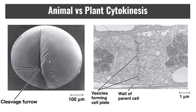In animal cytokinesis, a cleavage furrow develops. The cleavage furrow forms near the old metaphase plate from a contractile ring of actin microfilaments associated with the motor protein myosin, acting like a little muscle that cinches closed and pinches the cell in two.